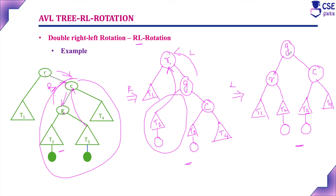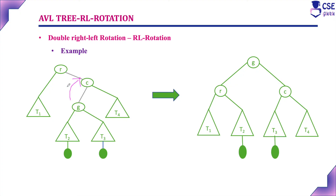After performing the left rotation, G is the root node, R is the left subtree, and C is the right subtree. This is RL rotation: first a right rotation pointing to G and C, then a left rotation pointing to G and R. We get a balanced tree — this is an AVL tree. The right rotation makes G go to root; C and T4 are its right child; the left subtree of G stays as is; the right subtree of G (T3 and new node) is attached as the left subtree of C.